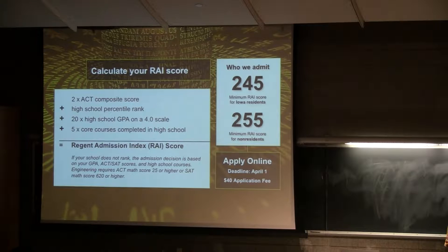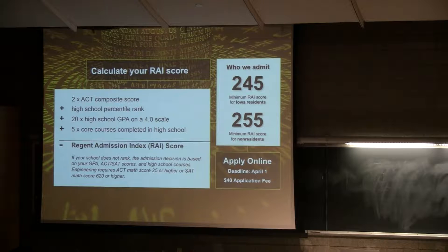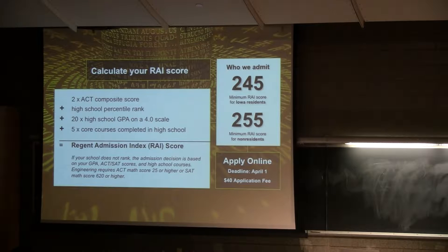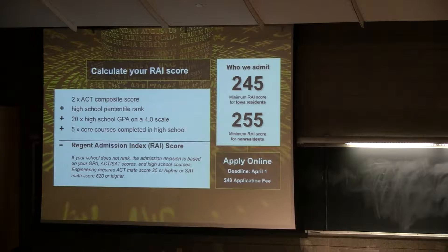This is what Iowa, Iowa State, and UNI all use to admit students. You see up here a formula — these are the different factors we look at. We're going to look at your ACT, your class rank, your high school GPA, and your core classes.